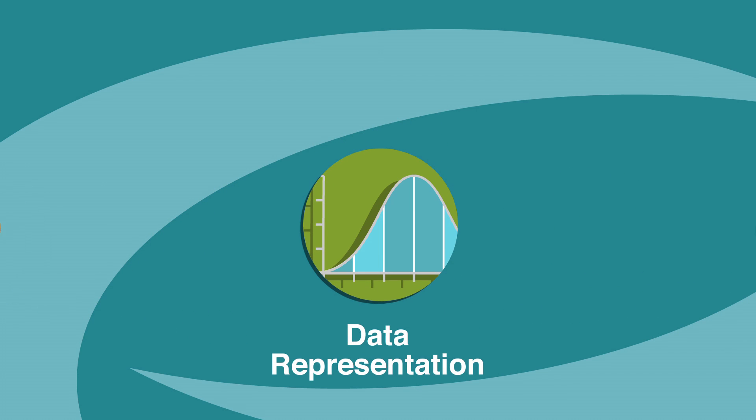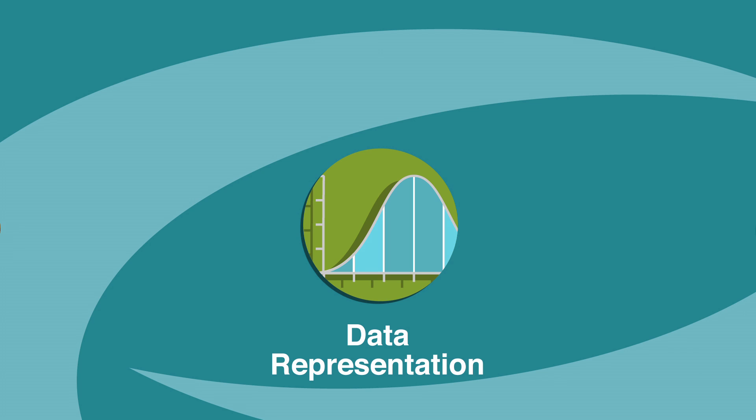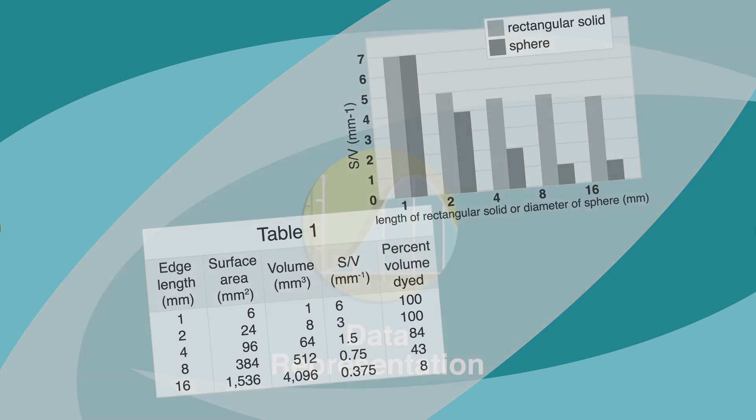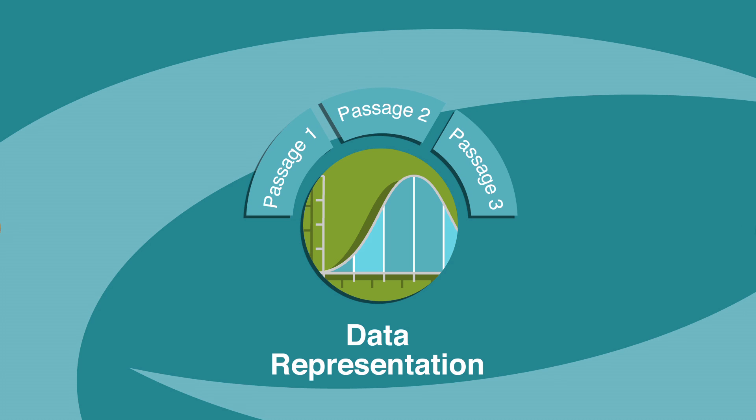The data representation passages are usually pretty straightforward. They ask you to use graphs, tables, and other schematic forms to answer questions. Typically, you'll see three of these passages with five questions each.